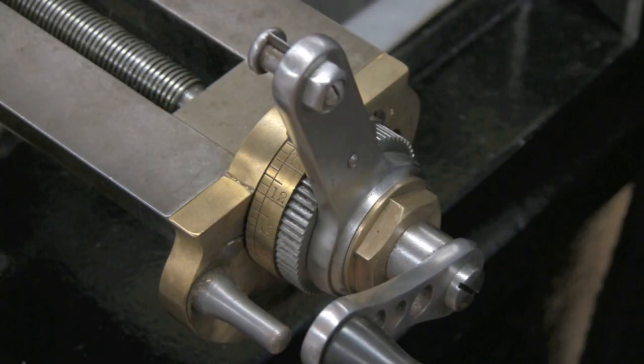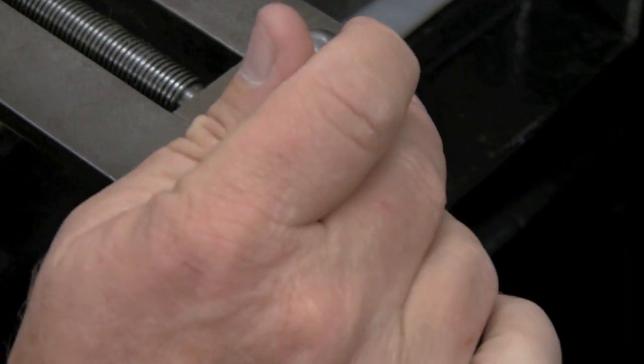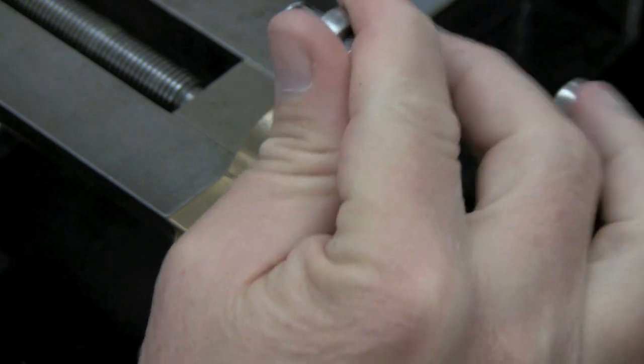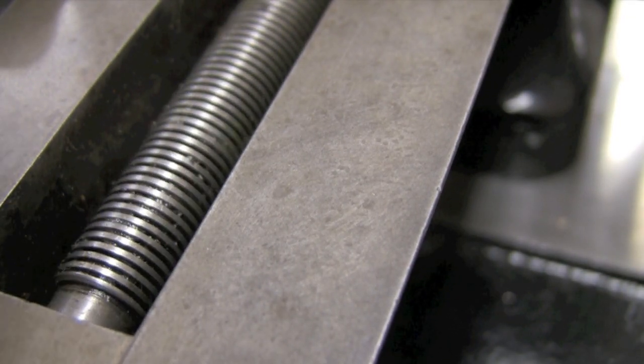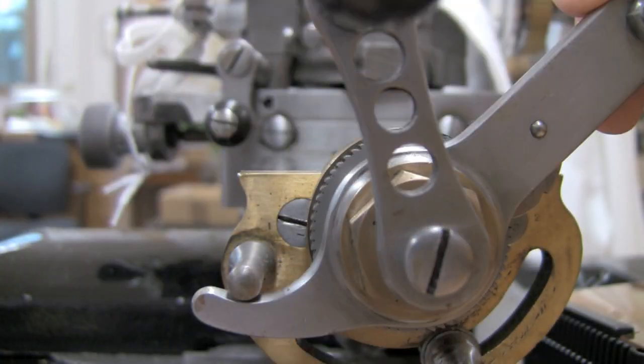We will ratchet that sometimes once, sometimes twice, could be more, depending on the pattern we're creating. And that is moving the entire carriage that the slide piece is on that holds the cutter and the guide. That's moving that over at a precise measurement.